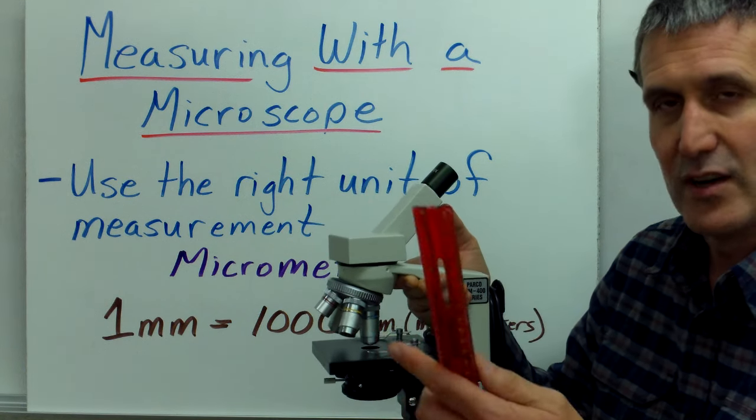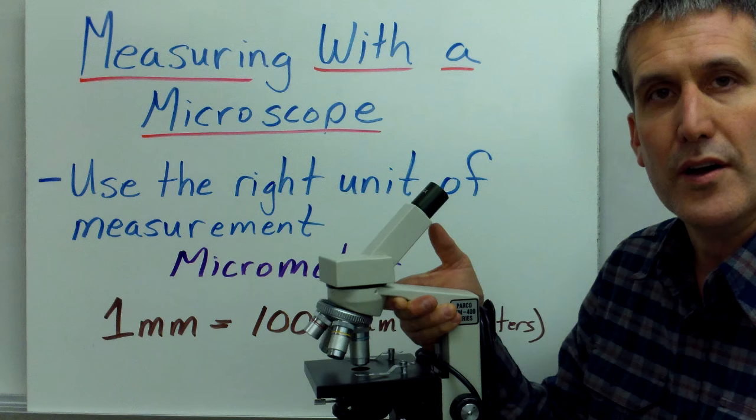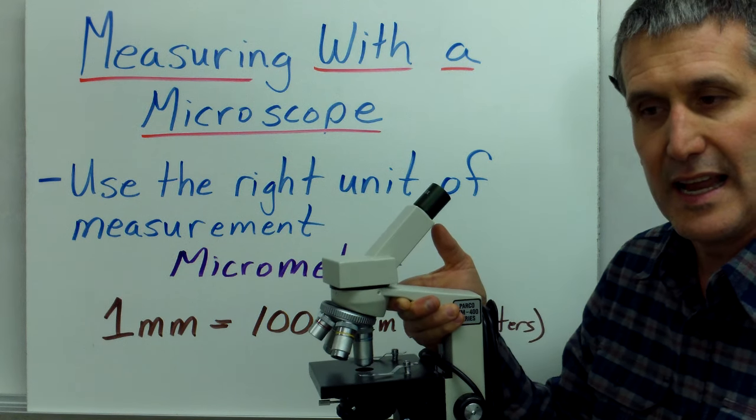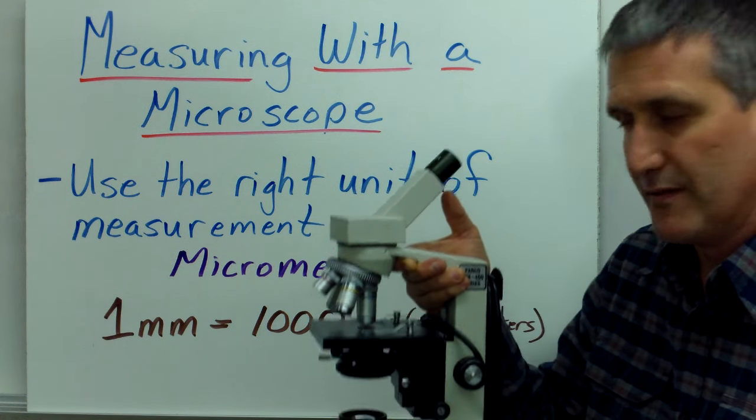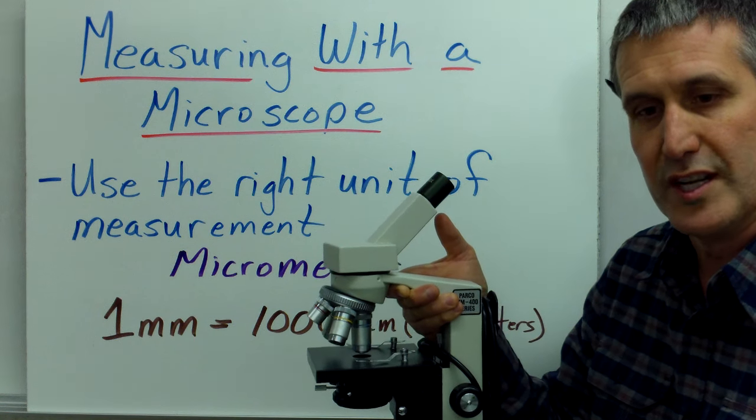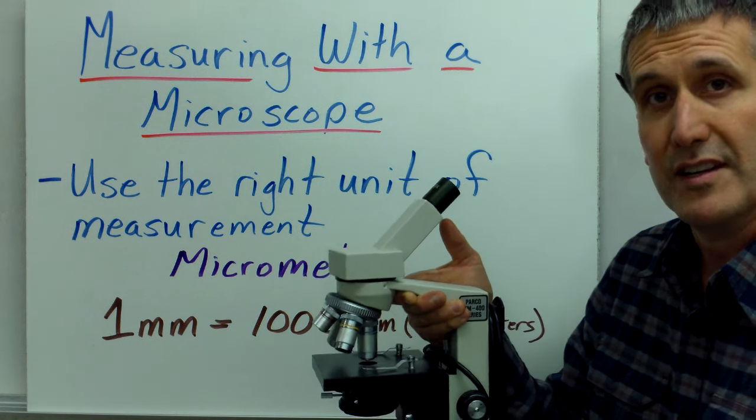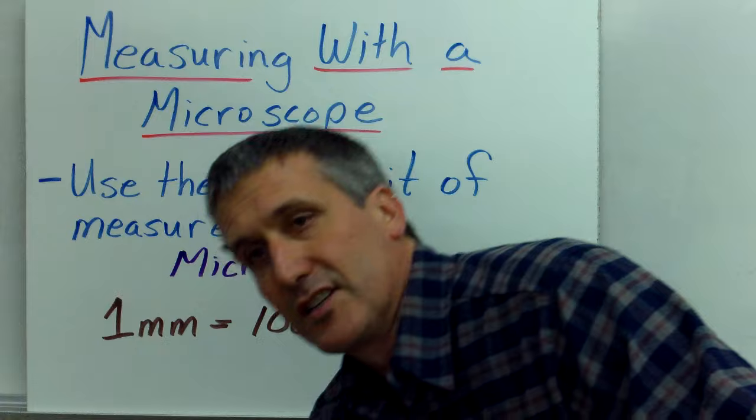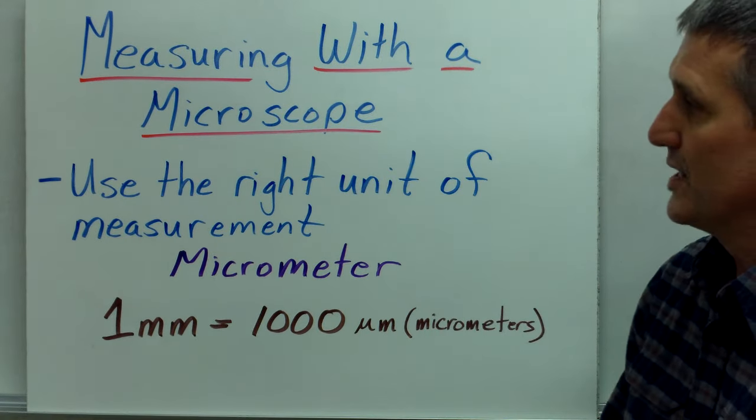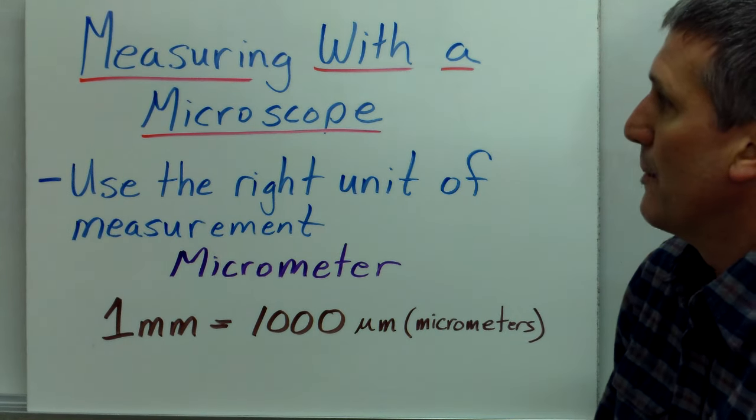And you can't just take a ruler and put it underneath the objective lens and get accurate estimates of how big something is because you're dealing with things that are very small. So this lecture talks about how you measure with a microscope.